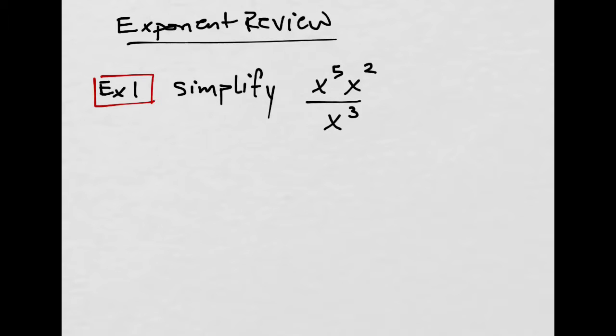So here, we can add the 5 and the 2. This will actually be x to the 5 plus 2 is 7, so x to the 7th over x to the 3. We didn't do anything with that. So if we're multiplying variables, we add the exponents.